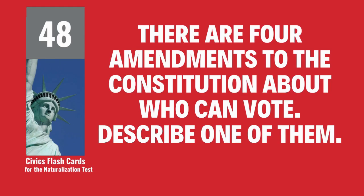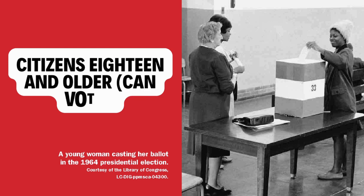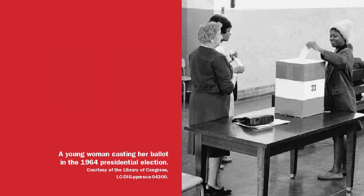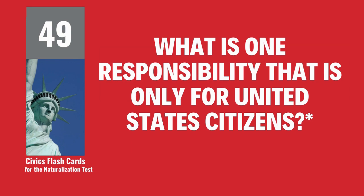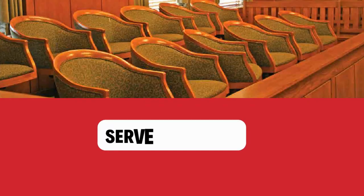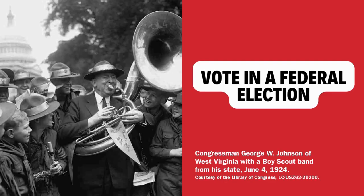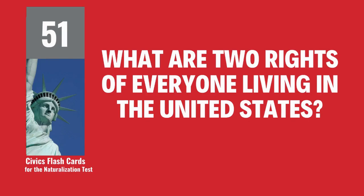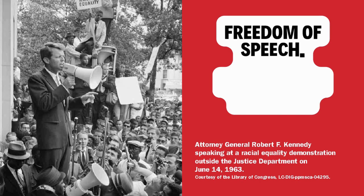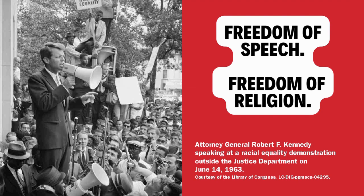There are four amendments to the Constitution about who can vote. Describe one of them. Citizens 18 and older can vote. What is one responsibility that is only for United States citizens? Serve on a jury. Name one right only for United States citizens. Vote in a federal election. What are two rights of everyone living in the United States? Freedom of speech. Freedom of religion.